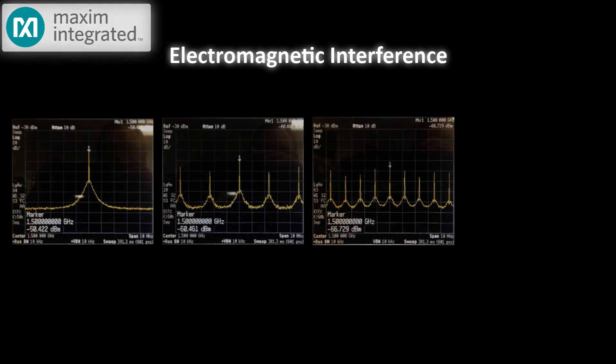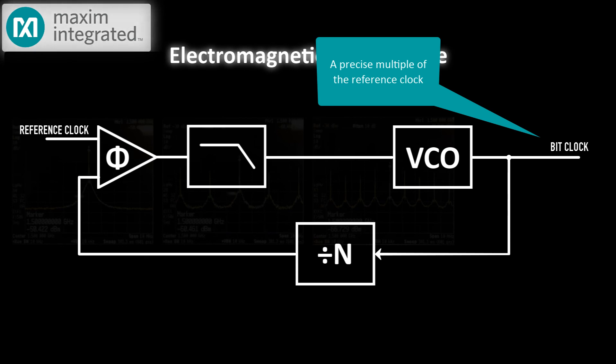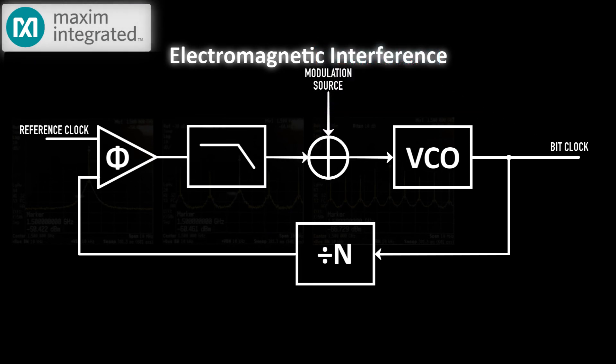There is. Up to now, we've been sending bits at precise intervals. But what if we made the bit interval a little less precise? Not enough to dramatically wreck the eye diagram, but enough to smear those peaks out just a little. Maxim serializers include a spread-spectrum modulator that very slightly changes the frequency of the serializer clock.